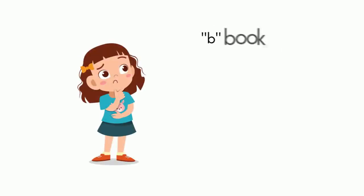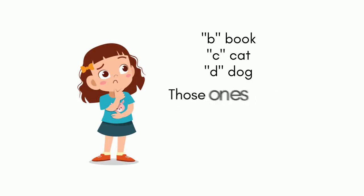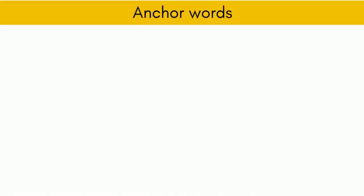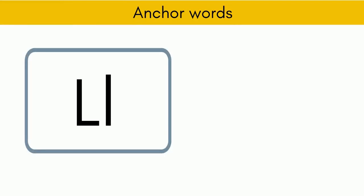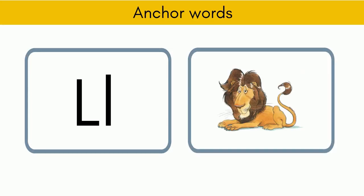B-book, C-cat, D-dog — those ones are straightforward. But there are other consonants where things are not so straightforward. Here's an example: how do you pronounce this letter? When I train teachers these days, I find that many teachers pronounce it something like 'el'. This seems to come from certain phonics programs and is understandable because of the phonetic pronunciation of the letter L. But I think there are problems with doing things this way, at least for English as a foreign-language learners.